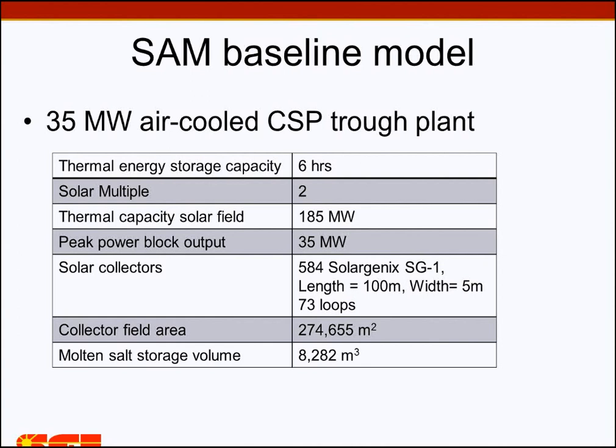The benchmark model was a 35 megawatt air-cooled parabolic trough plant. I tried to choose a relatively normal plant configuration: thermal energy storage of six hours, solar multiple of two. The solar field capacity and peak power block output is 35 megawatts. Details about the solar collectors and their type and size are included, and the total collector area was 275,000 square meters.